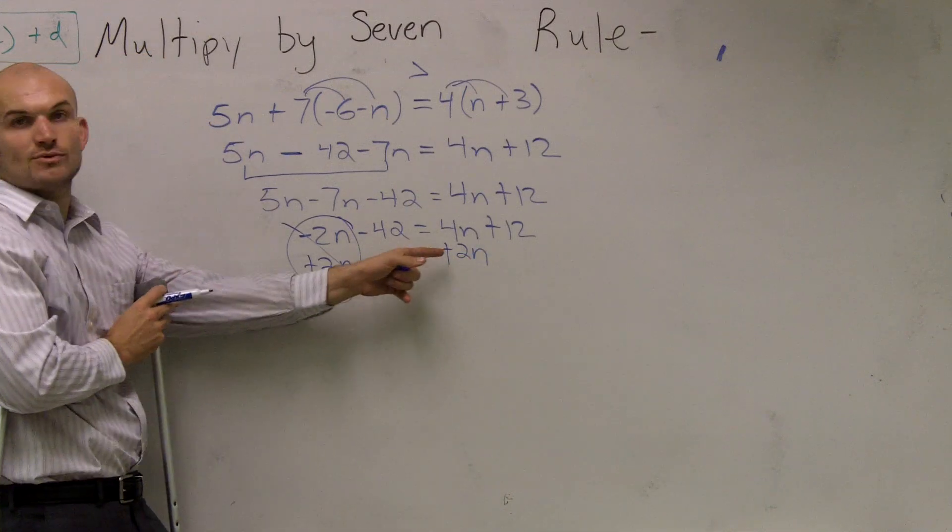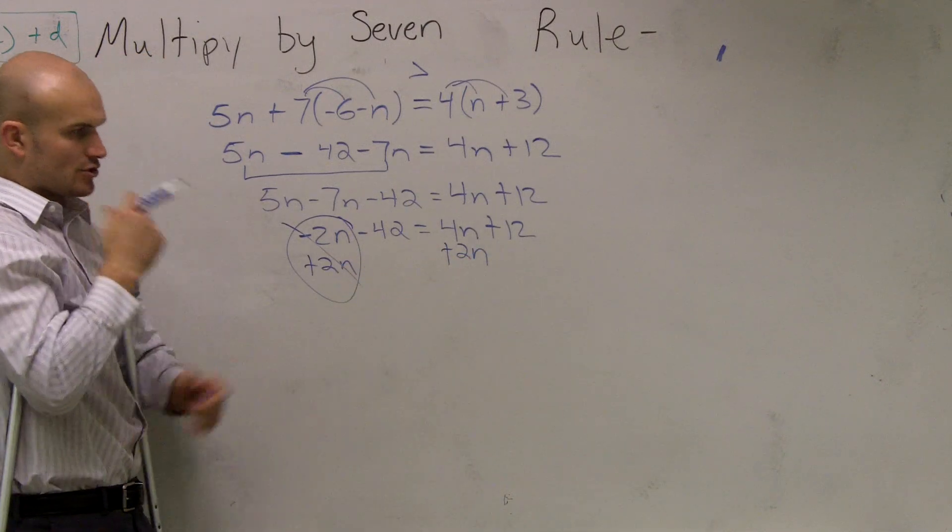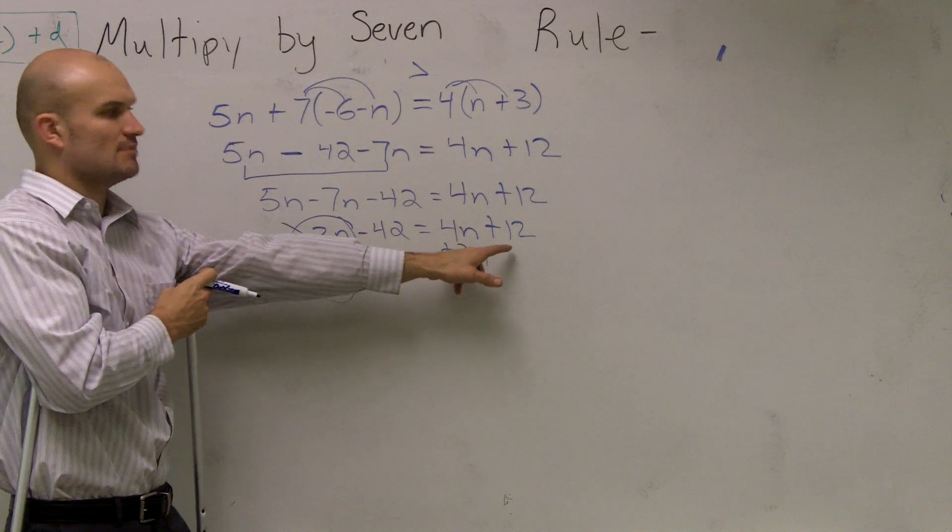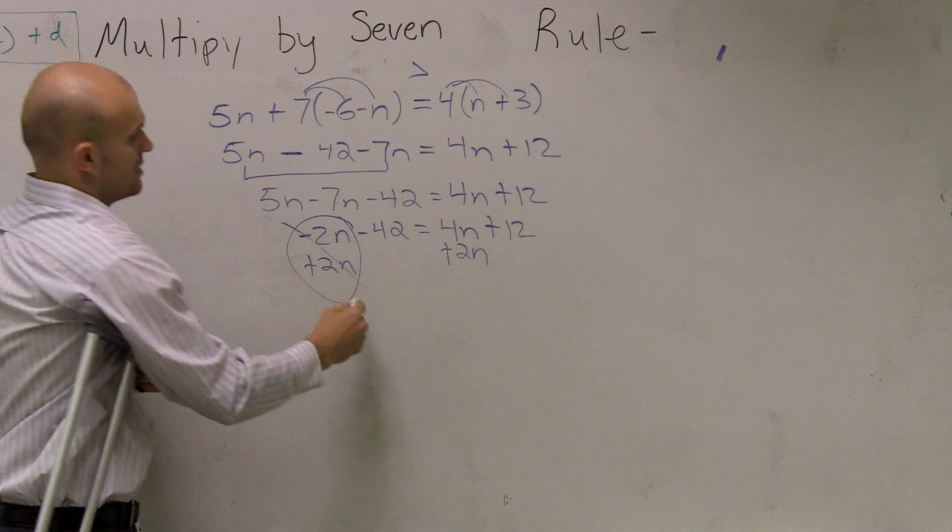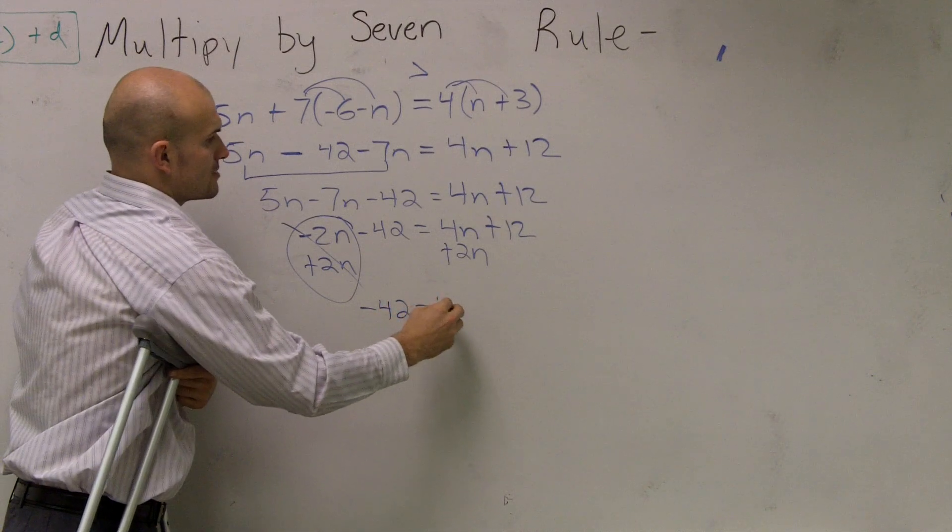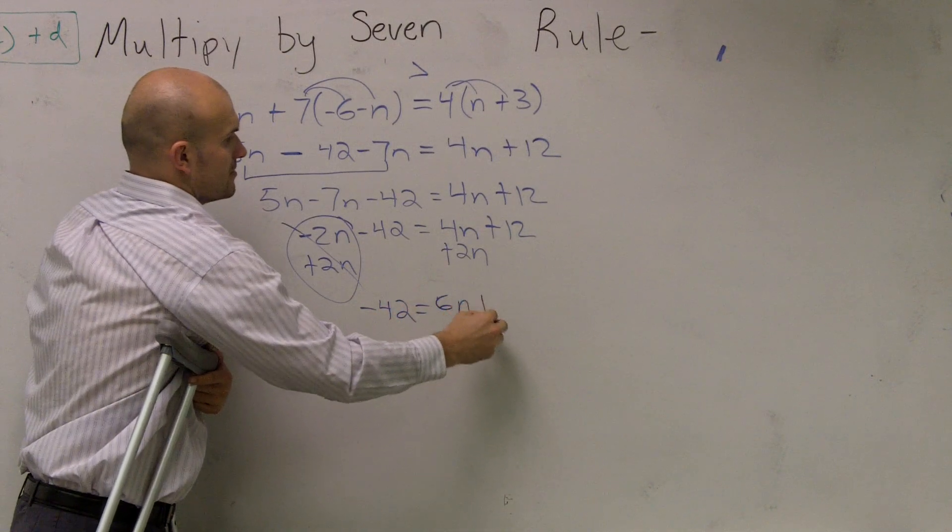Remember, you can only add the 2N to your 4N. So you only add it once on the other side, and you can only combine the 2N to that 4N. You can't combine 12 and 2N. So therefore, I have a negative 42 equals 6N plus 12.